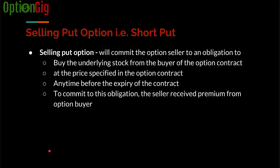Now let's look at the short option — that is, selling a put option. What does selling a put option do? Selling a put option commits the option seller to an obligation to buy the underlying stock from the buyer of the option contract. So the buyer is putting the stock, and the seller will have to buy that stock at the specified strike price anytime before the expiry of the contract. Whenever the option buyer exercises its right to put the stock, the option seller has an obligation to buy the stock from the option buyer.